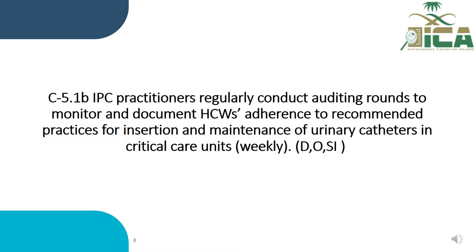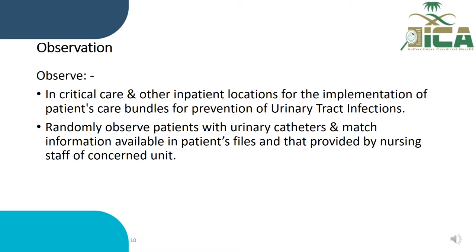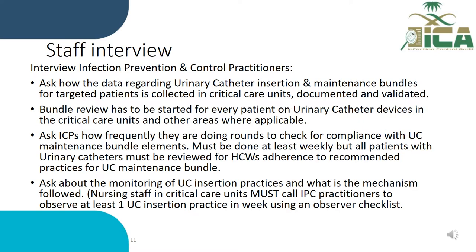Check that infection prevention and control practitioners perform weekly documented rounds to check healthcare workers' practice in insertion and maintenance of urinary catheters, through reviewing documents, observations, and staff interviews. During audit rounds, ask about patients with urinary catheters and review their files. Observe whether the urine collection bag is kept below the level of the bladder, if the catheter is properly secured, if there is a continuously closed drainage system, how often the urine bag is emptied, and that staff follow aseptic techniques and appropriate PPE. Ask about how data is collected, documented, and validated.